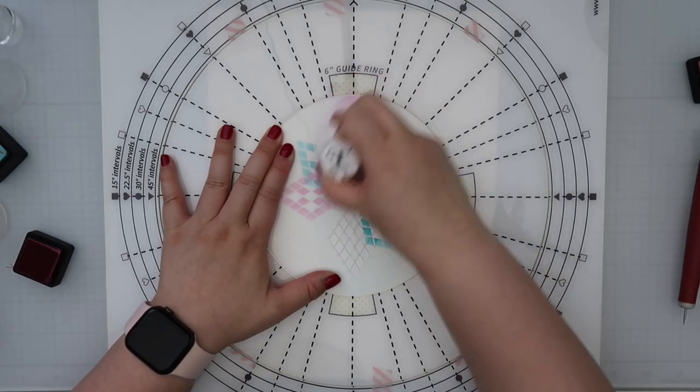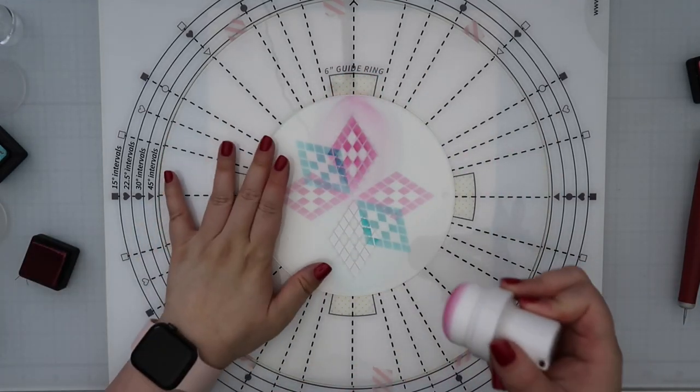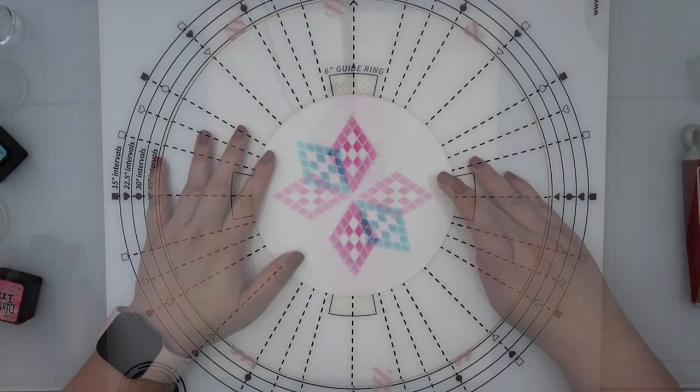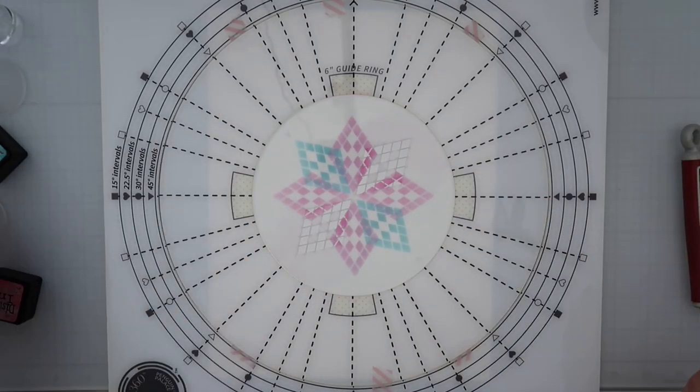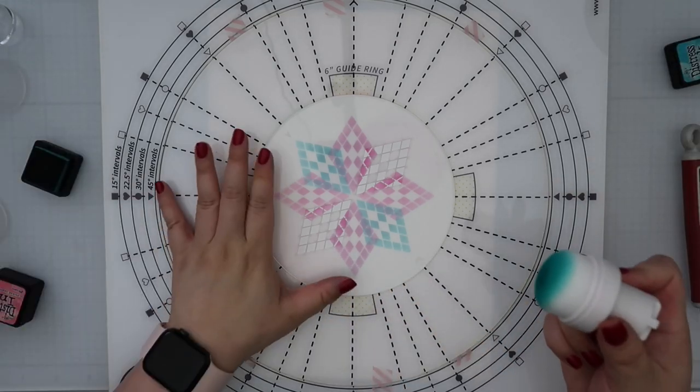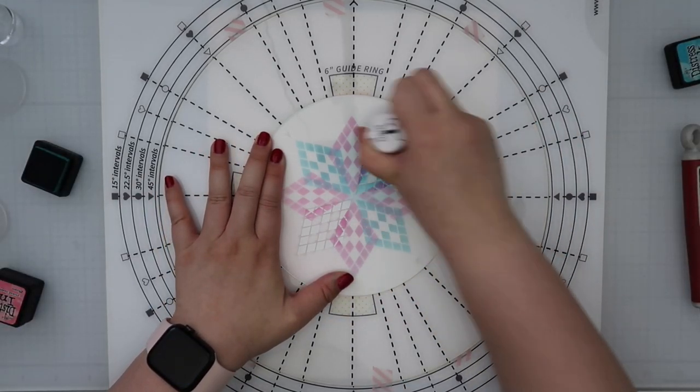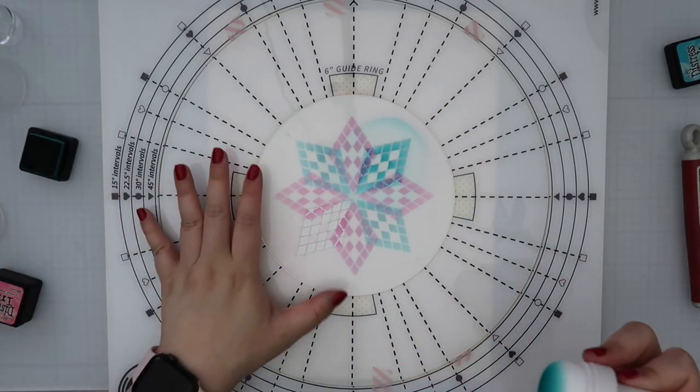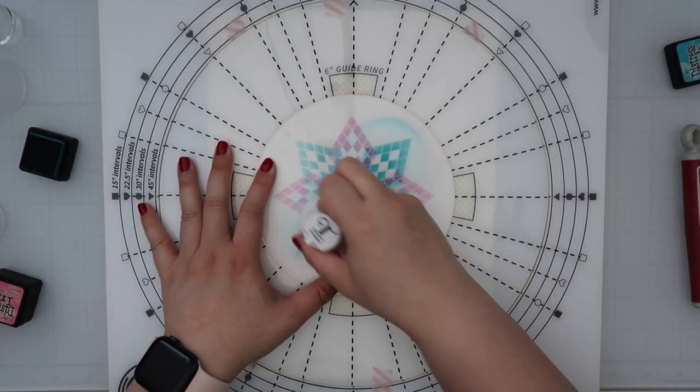So I decided to alternate my colors between peacock feathers and picked raspberries. I really like how the colors kind of mix and sort of create dark purple. That way I have two sets of the picked raspberries and two sets of the peacock feathers and I think it's really pretty. It creates this star pattern which I liked.